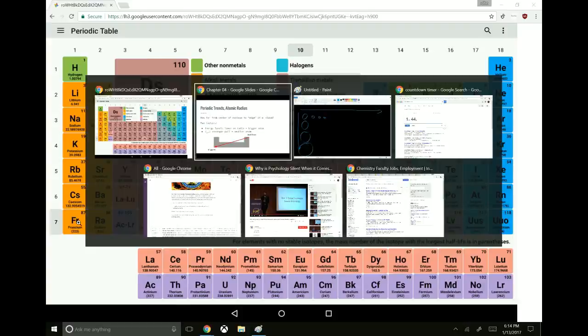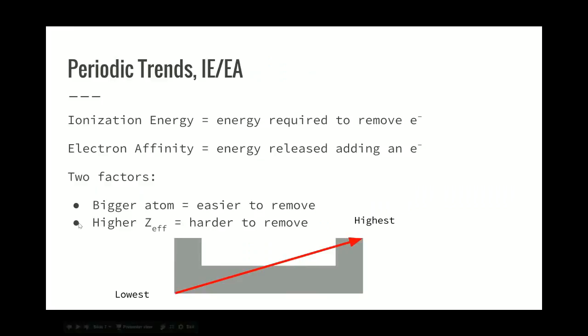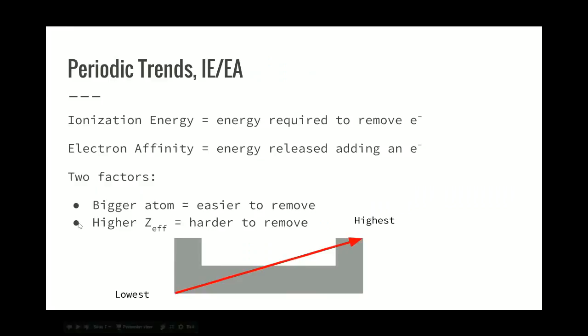Next up, we have ionization energy and electron affinity. These are kind of the same thing. The ionization energy, IE, is the energy required to remove an electron. Remember, positive and negative charges attract, so when you want to get an electron away from the atom, you're pulling it away from the nucleus. You have to put energy in to get the electron out. Electron affinity is the energy released when you add an electron to an atom. This follows the same two things: the size of the atom - how distant the outermost electrons are - and the effective nuclear charge. The bigger the atom, the further the electrons are from the nucleus, so they're going to be easier to remove.